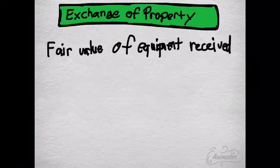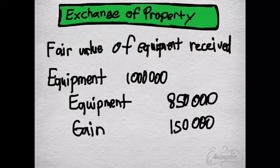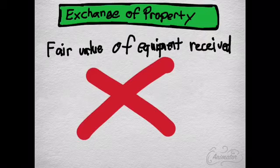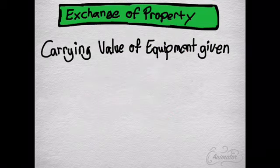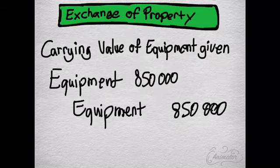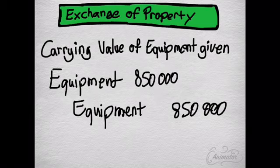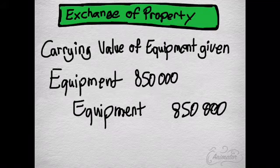What if the fair value of the property given is not available? Then we use the fair value of the property received. We would debit equipment for 1 million — the value of the zip-up backpack shoes — then credit equipment for the carrying amount of 850,000, and the excess of 150,000 would be credited to gain. If that's also not available, we use the carrying value of the equipment given: debit equipment for 850,000 and credit equipment for 850,000, with no gain recognized.